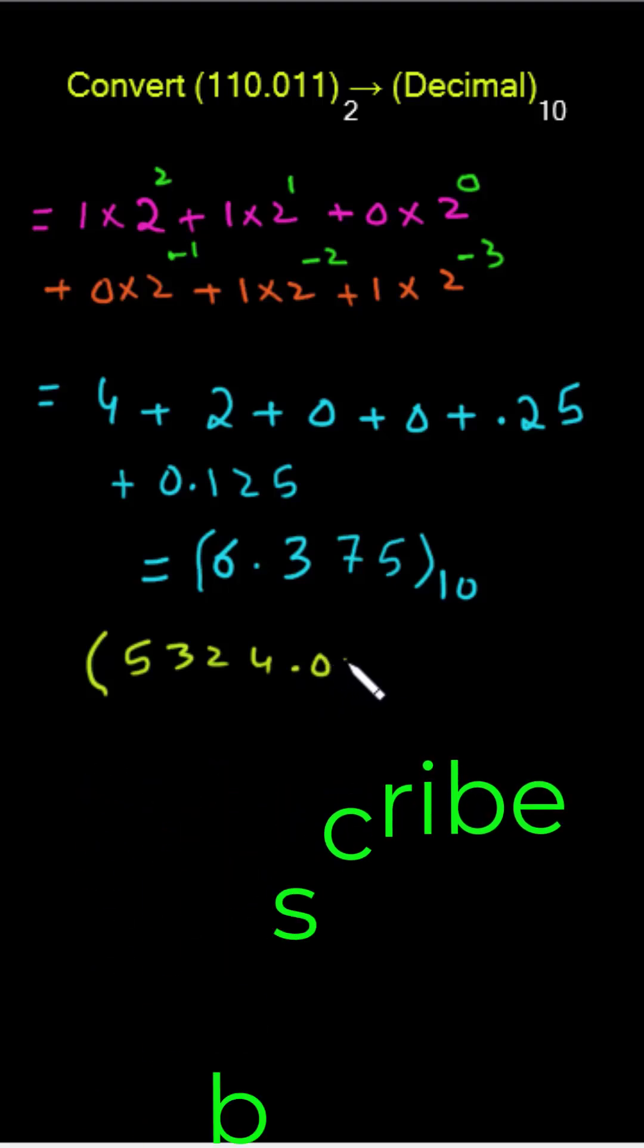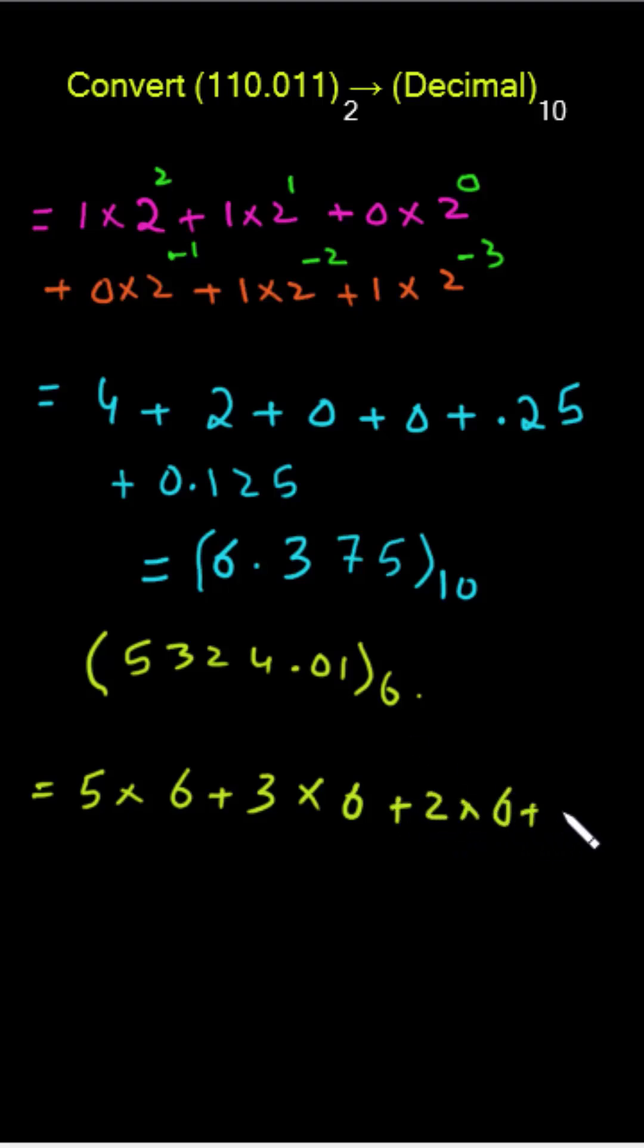So what I will do: I will multiply 5 with 6, plus 3 multiplied with 6, plus 2 multiplied with 6, plus 4 multiplied with 6. Then the fraction part of this base 6 number: 0 multiplied with 6, plus 1 multiplied with 6.